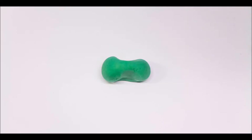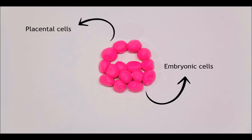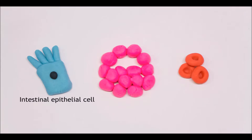The zygote that is formed by fusion of the egg and sperm cell starts to divide and ultimately becomes a blastocyst, containing both embryonic cells and placental cells. Finally, the embryonic cells will become more and more specialized.